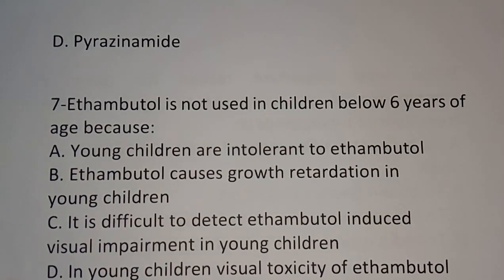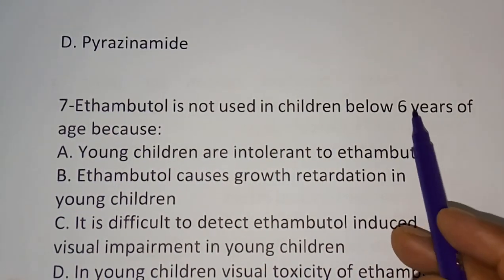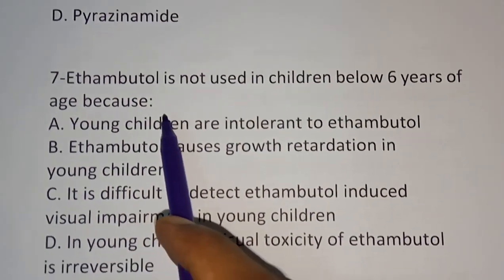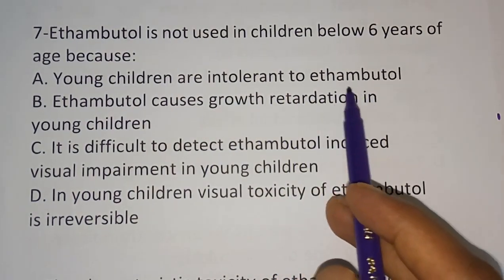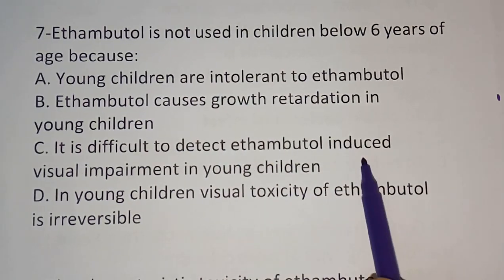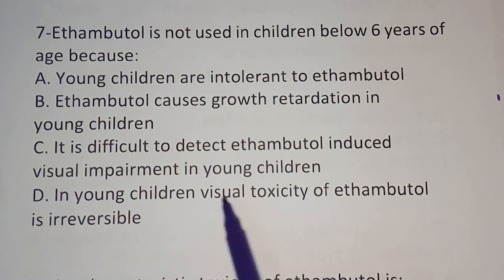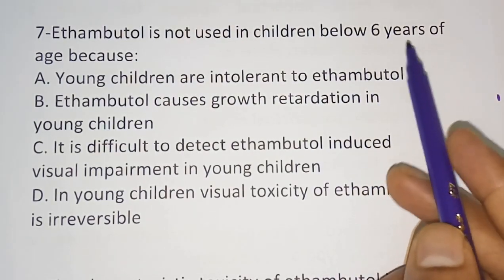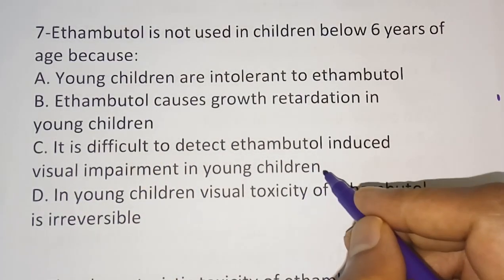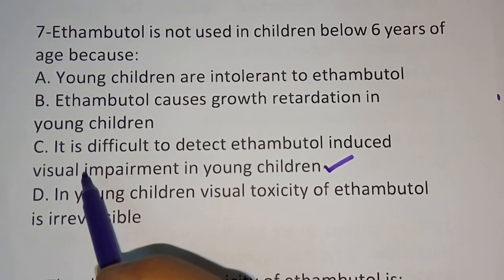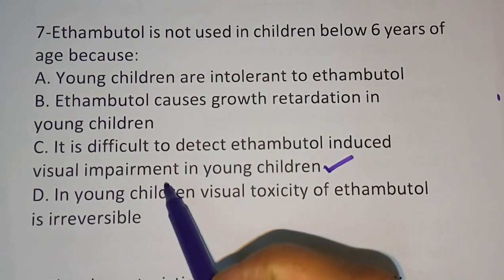Seventh question: ethambutol is not used in children below 6 years of age because — option A: young children are intolerant to ethambutol, option B: ethambutol causes growth retardation in young children, option C: it is difficult to detect ethambutol-induced visual impairment in young children, option D: visual toxicity of ethambutol is irreversible in young children. The correct answer is option C — it is difficult to detect ethambutol-induced visual impairment in young children.